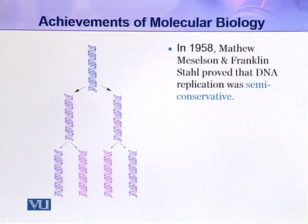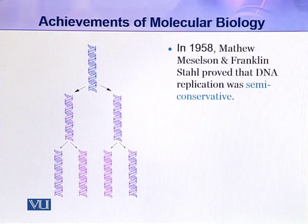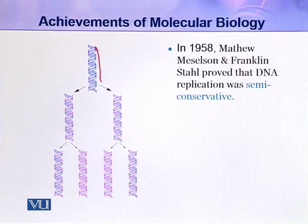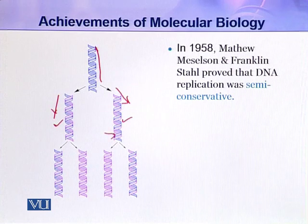The next important discovery was made in 1958 by Matthew Meselson and Franklin Stahl. They proved that DNA replication is semi-conservative. As shown in this picture, when a DNA molecule replicates, one strand goes to each new molecule. The blue strands are the parental strands, inherited from the original DNA molecule, while the pink strands are newly synthesized.